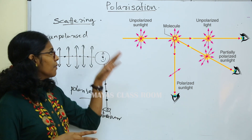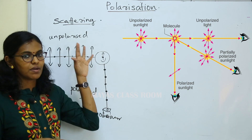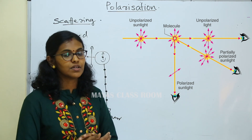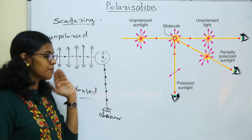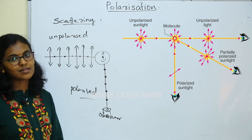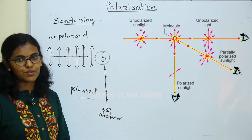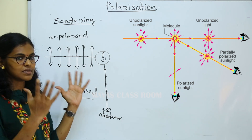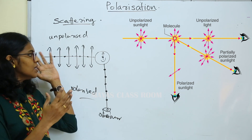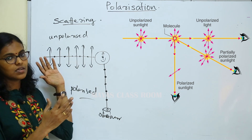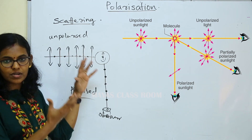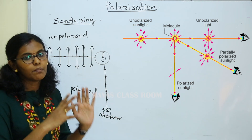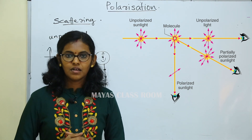There is a polarizing sheet by scattering. Unpolarized light will be polarized light.